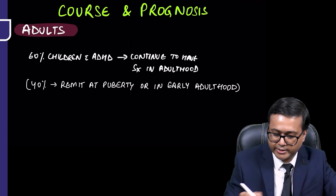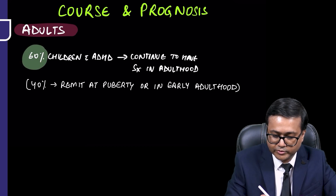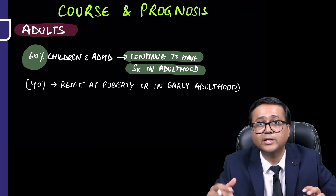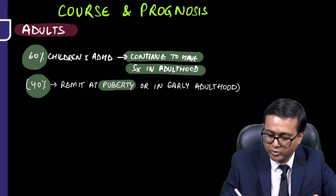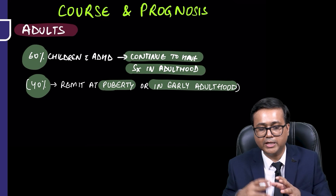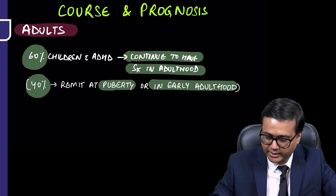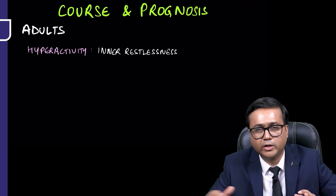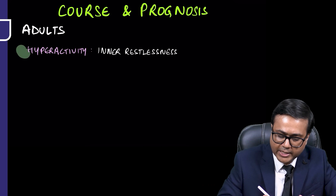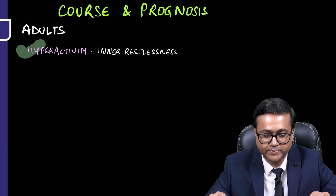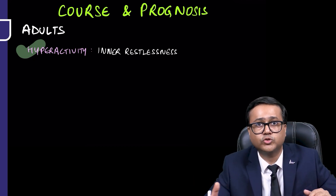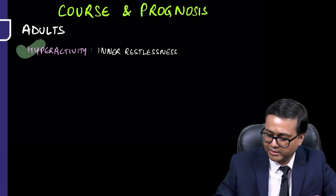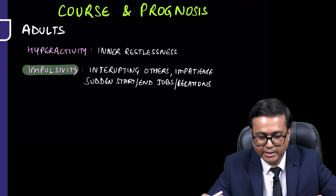In adults, 60 percent of children with ADHD continue to have symptoms in adulthood, while 40 percent may remit at puberty or in early adulthood. Adults with ADHD may report hyperactivity in the form of inner restlessness — being unable to relax, increased talking, or inability to sit for long periods.